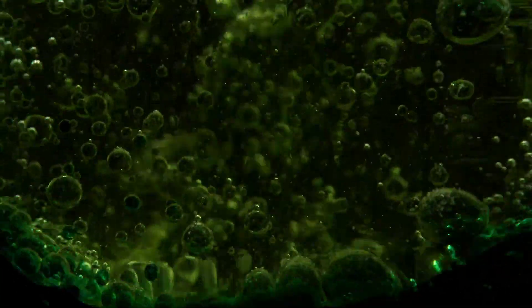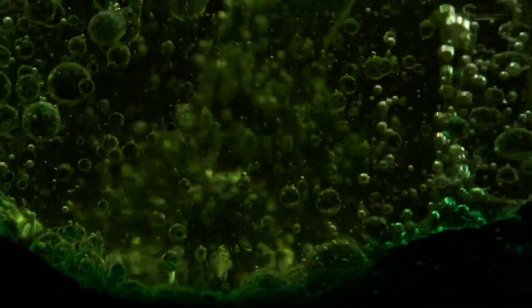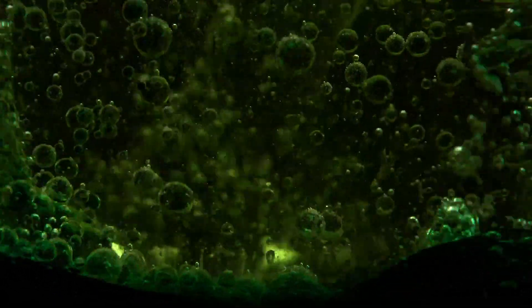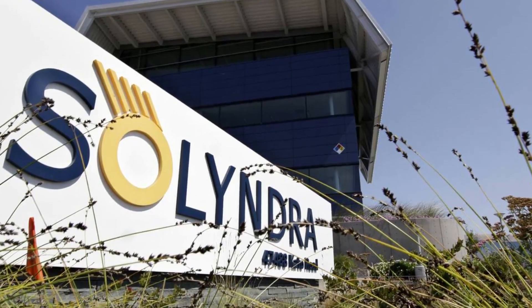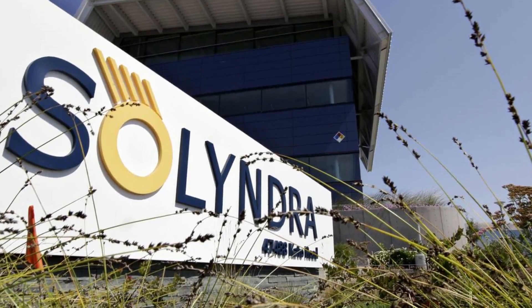In 2008, polysilicon prices hovered above $400 per kilogram, but by the time the federal government approved Solyndra's loan, they had dropped to just over $50 per kilogram. What role did this serendipitous event play in Solyndra's ultimate downfall?